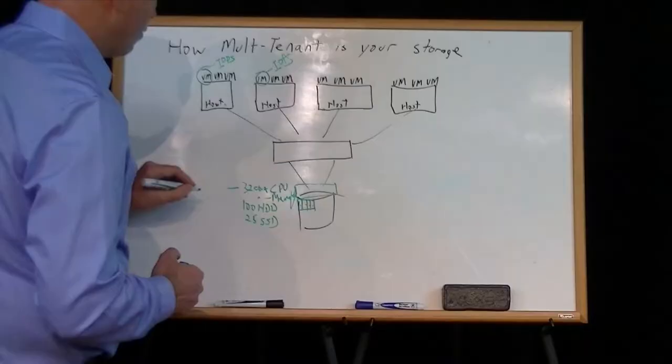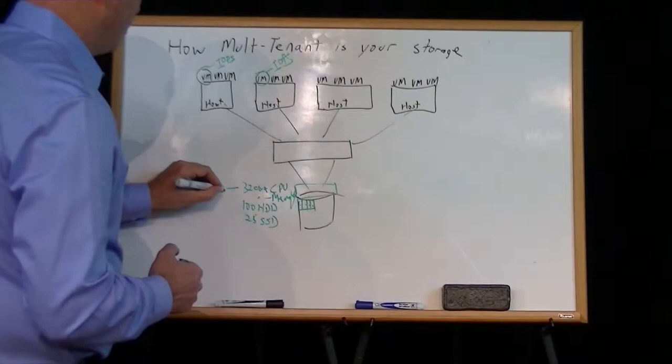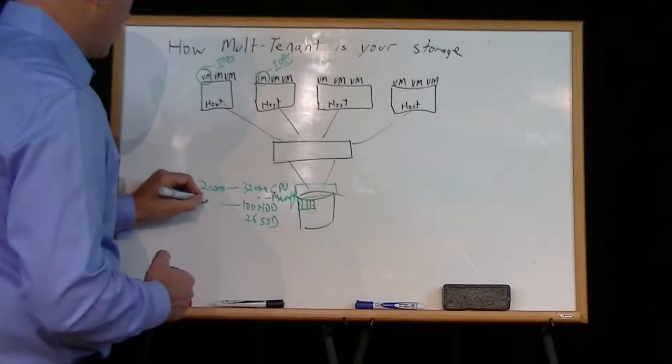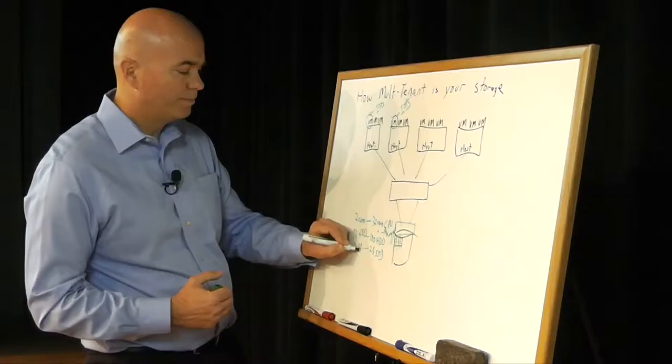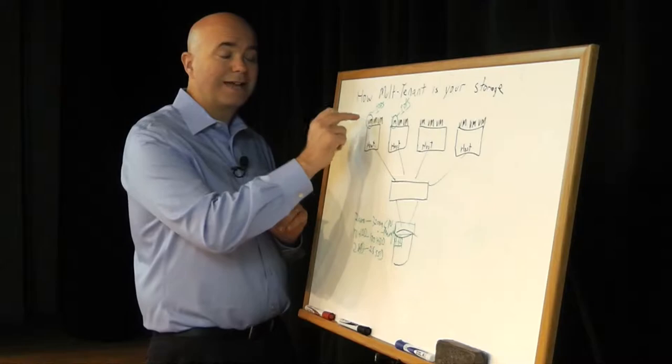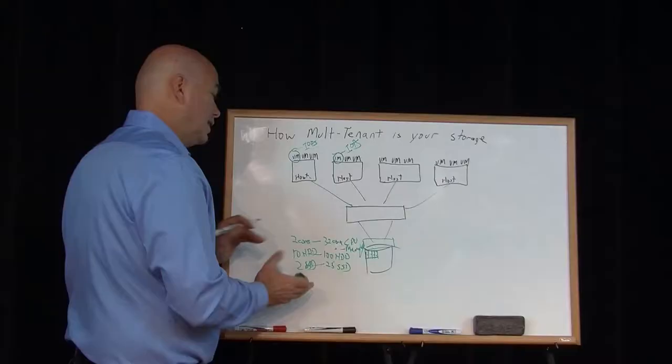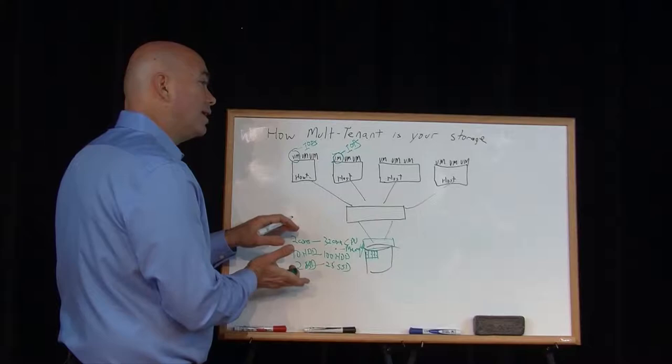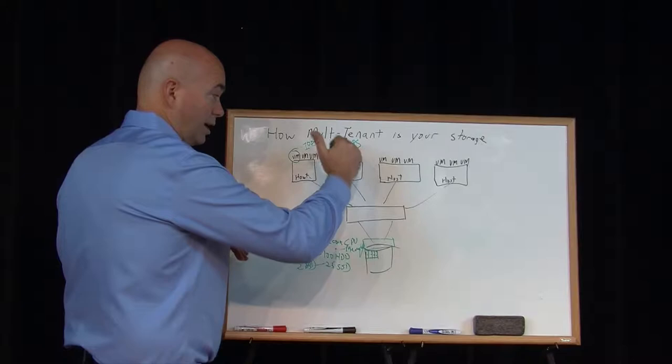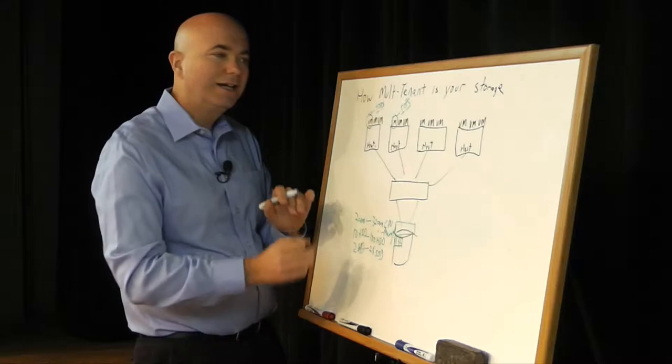So I might say, I want to buy two cores and maybe instead of buy, rent's a better term for it. I'll rent 10 hard drives and I'll rent two SSDs. And those are now mine on a rental basis as a subscriber. I can do whatever I want with that capability. It's always mine. And so if another virtual machine comes in and it's also high performance, I've got my capabilities already set aside.